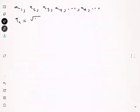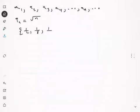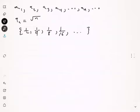Sometimes a sequence can be described by a formula, such as A sub n equals the square root of n. Sometimes it can be described as just a list of numbers, such as 1/2, 1/4, 1/8, 1/16, and so on and so forth.